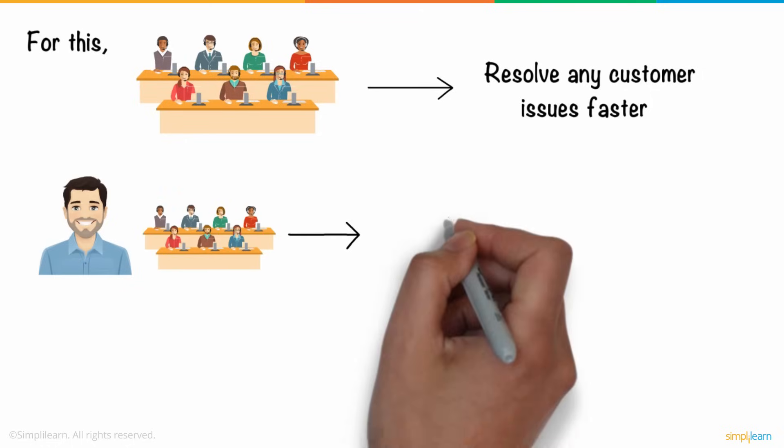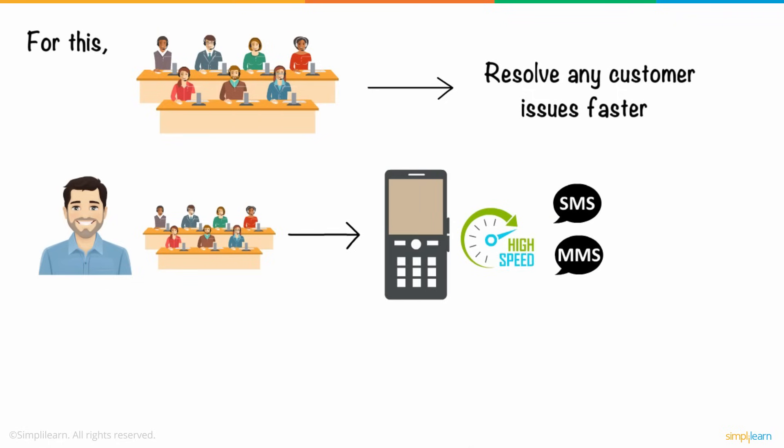Ted decided to have a dedicated customer support team to resolve any customer issues faster. So, he and his team upgraded to a better phone that not only provided a higher speed, but also enabled services like text messaging and multimedia messaging services. This was referred to as 2G.